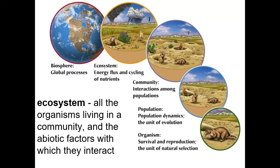An ecosystem is all of the living organisms in a community along with the abiotic factors. In ecology, an organism is an individual living thing, a population is all organisms of a particular species living in a particular area at a particular time, and a community is all of those different populations together.